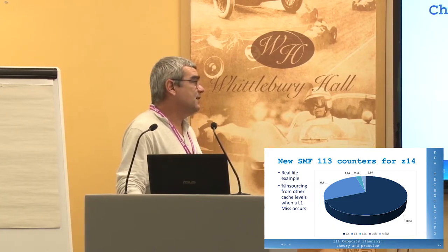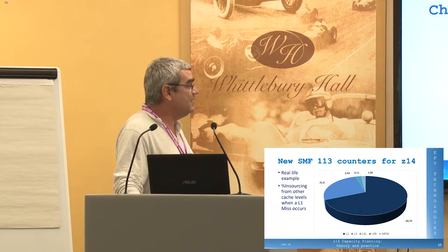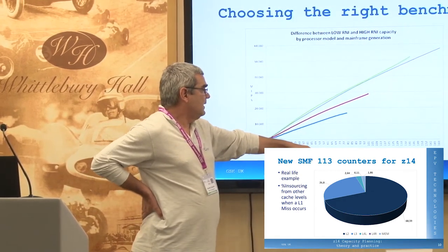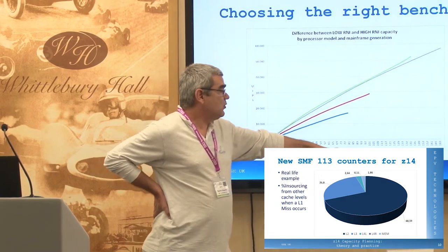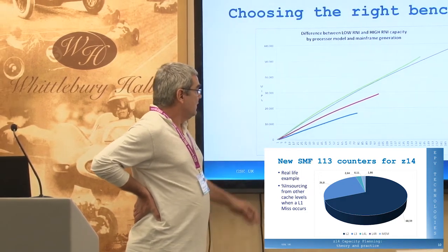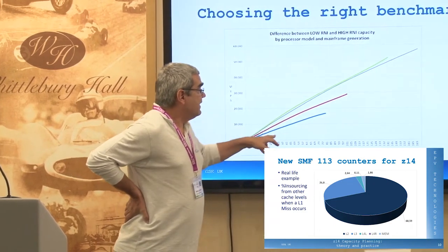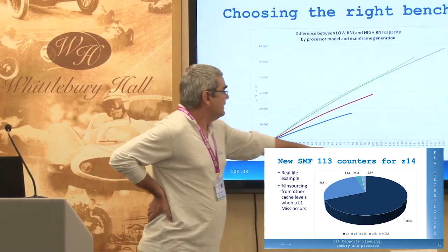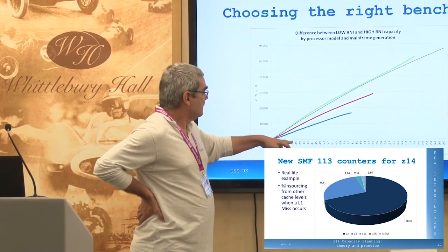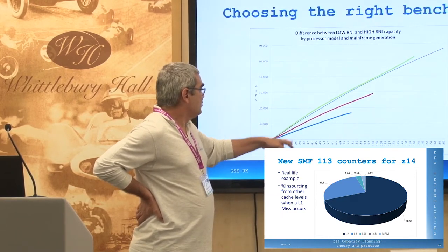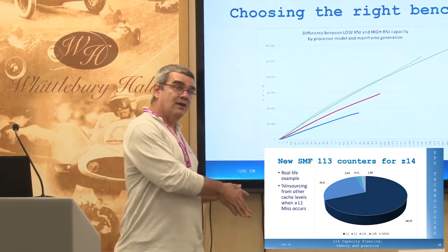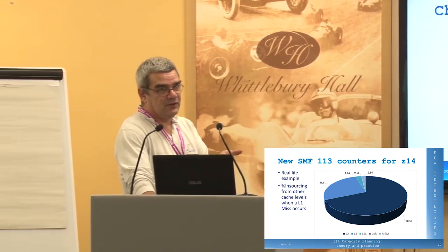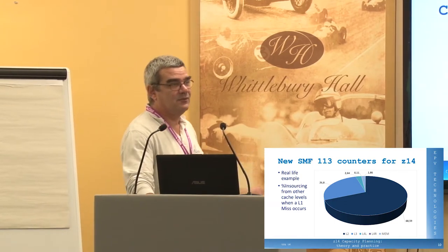This reinforces the same concept: depending on the hardware — z196, EC12, z13, or z14 — the difference between higher RNI and lower RNI can be around 20 percent. For a z14, higher RNI is close to 8,000 MIPS — just the difference between choosing low or high RNI benchmark is a big difference. So the suggestion is: turn it on, measure, do your math, and decide where you are.